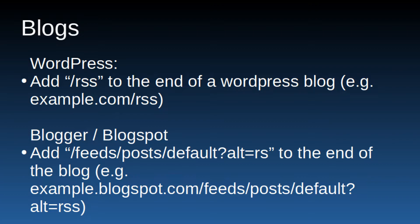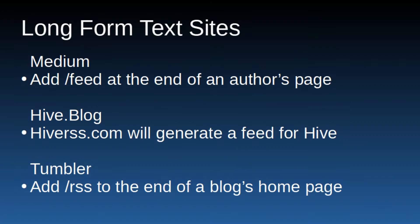For a Blogspot or Blogger RSS feed, go to the main site and type /feeds/posts/default?alt=rss. I'll have all these things on screen if you're watching the video, and a text form linked below where you can copy and paste. For Medium, go to the author's page and type /feed to get a feed URL. For Hive.blog, which doesn't natively support RSS, you can use HiveRSS.com — the URL format is hiverss.com/@username/feed. HiveRSS has many more in-depth options, so I highly recommend visiting hiverss.com to explore all the ways to get feeds.